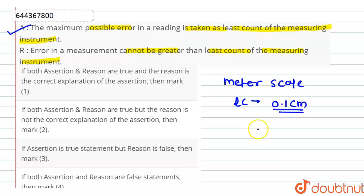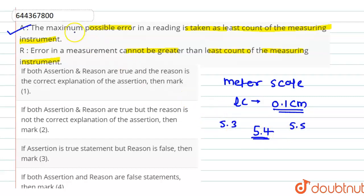It means if the reading is 5.4, then the maximum possible error in the measurement can be 5.5 or 5.3. So the statement of assertion — that the maximum possible error in a reading is taken as the least count of the measuring instrument — is true.